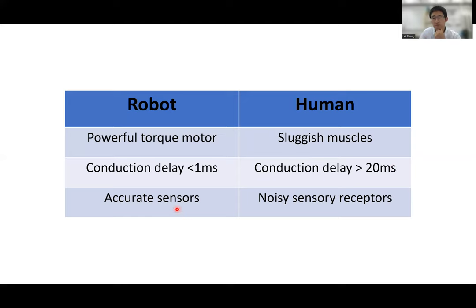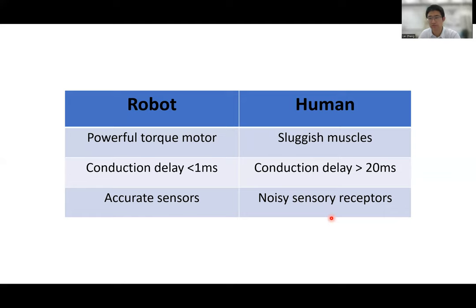A robot is also equipped with high-tech, accurate sensors that can measure everything from the environment — position, pressure, force, and so on. In humans, we also have many sensory receptors, but they are not very reliable and are less accurate. The sensory signals from the periphery travel back through the spinal cord to the brain, and this whole pathway has a lot of noise. Despite this, humans still perform much better at manipulation tasks compared to robots.